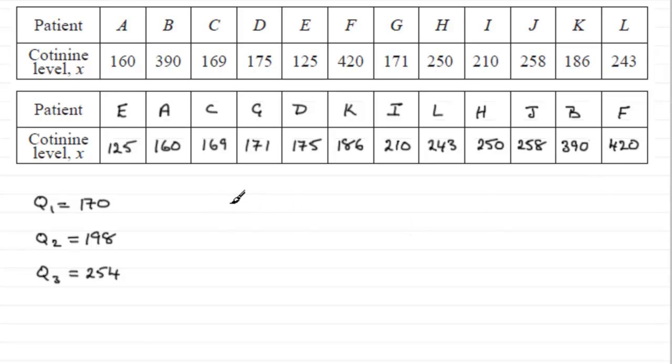we use the formula Q3 plus 1.5 times the interquartile range, Q3 minus Q1. So this is going to tell us if there are any outliers towards this end.